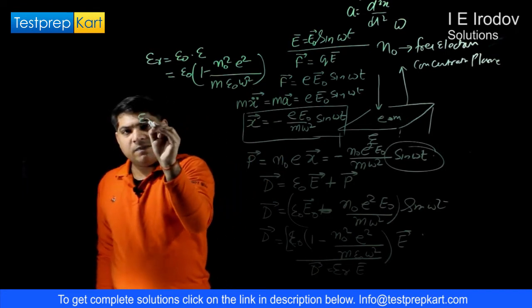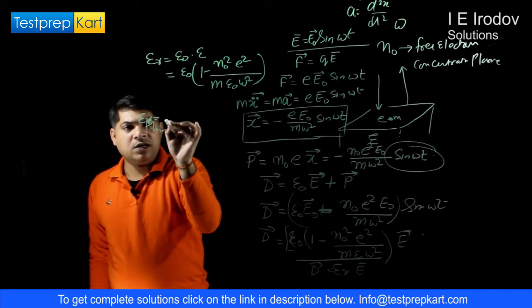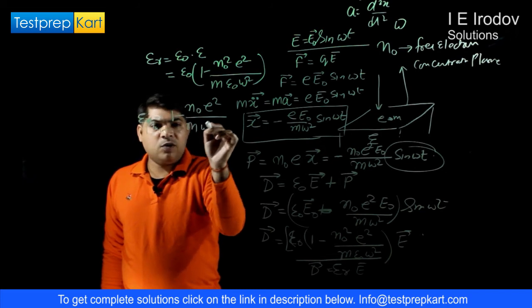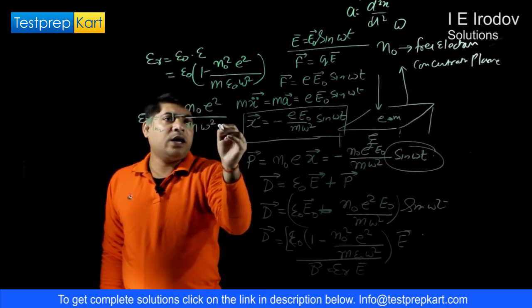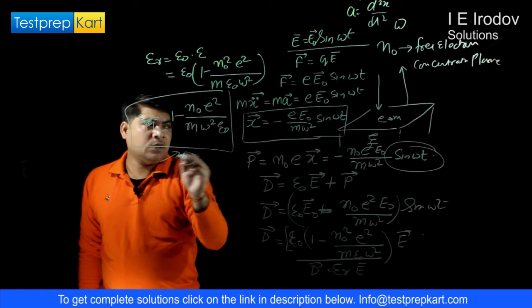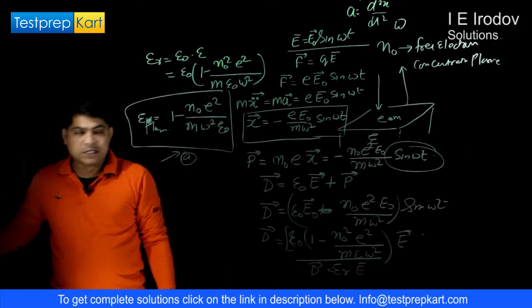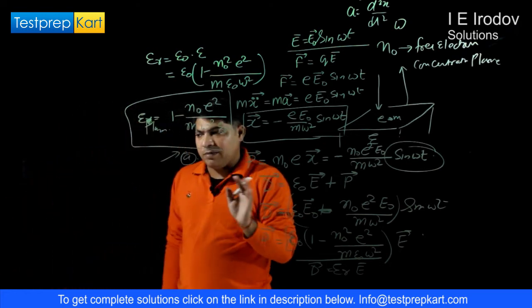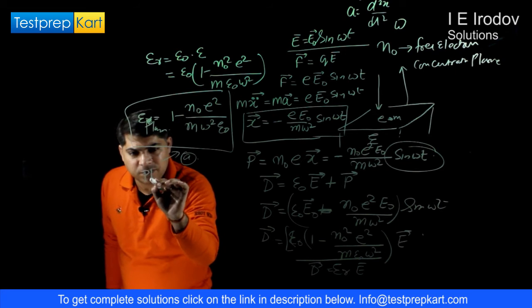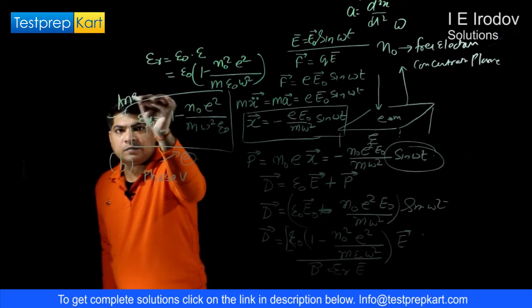From here we get the relative permittivity for this plasma: epsilon = 1 - N0 e² / (m omega² epsilon0). This is the answer for part A, showing how the relative permittivity of plasma depends on the frequency omega.